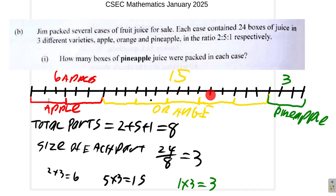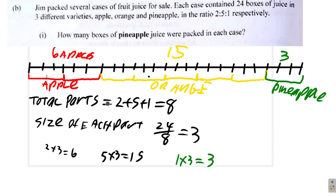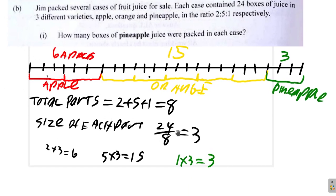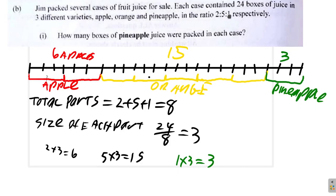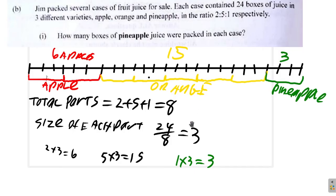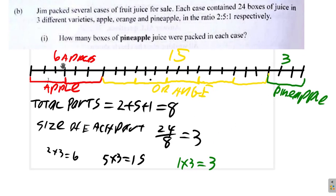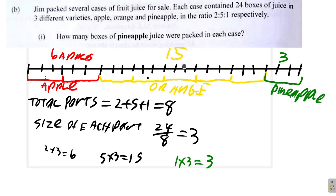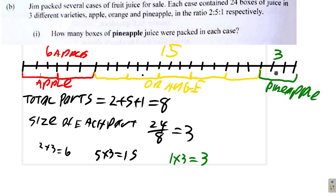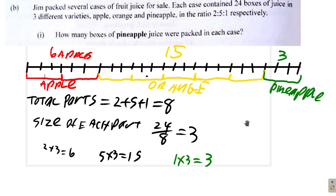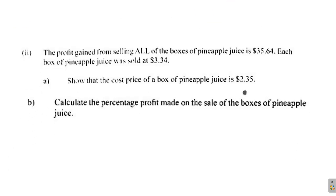Right? But, I want to illustrate the point. What you would do in exam, you just divide it 24 by 8 to find the 3. And, since there is 1 unit of 3 for pineapple, it's 3 times 1, it is 3. There will be 3 boxes of pineapple. You have 6 boxes of apples, 15 boxes of oranges, 3 boxes of pineapple. All right? So, that's what you have.